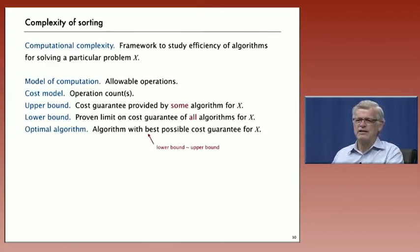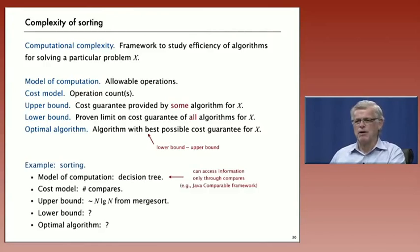Now, what we seek, ideally, is what's called an optimal algorithm, where we prove that the upper bound and the lower bound are the same. That's an algorithm that we know has the best possible cost guarantee. That's the ideal for solving any problem.